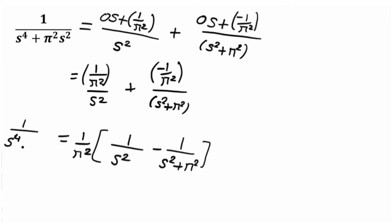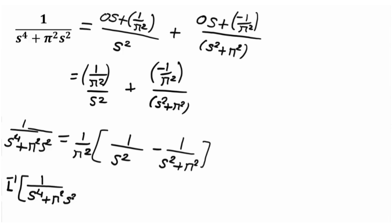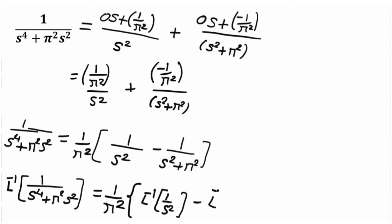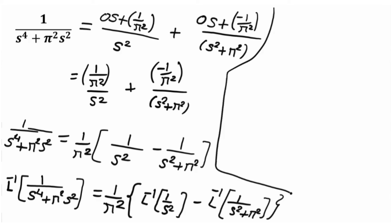Now apply the Laplace inverse on both sides. The Laplace inverse of 1 upon s to the power 4 plus pi squared times s squared equals — taking the constant 1 upon pi squared outside using the linearity property — Laplace inverse of 1 upon s squared, minus Laplace inverse of 1 upon s squared plus pi squared. The Laplace inverse of 1 upon s squared is t.